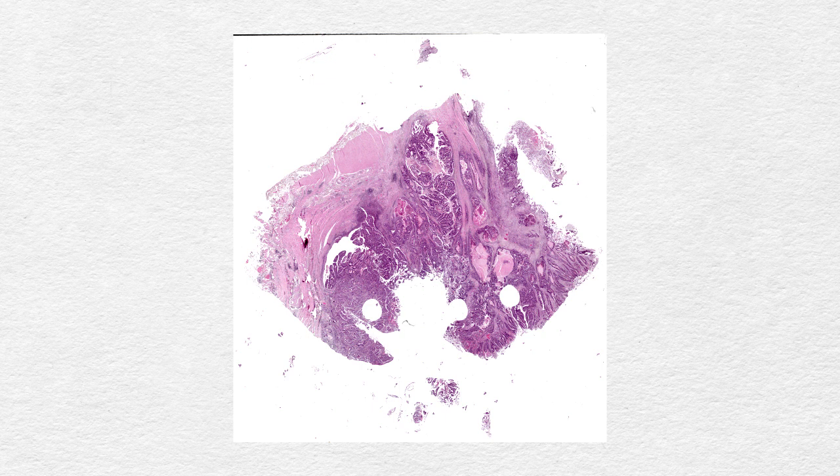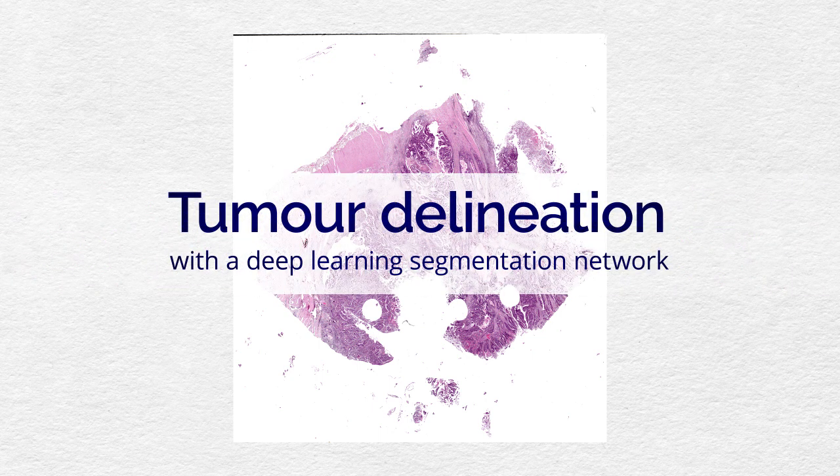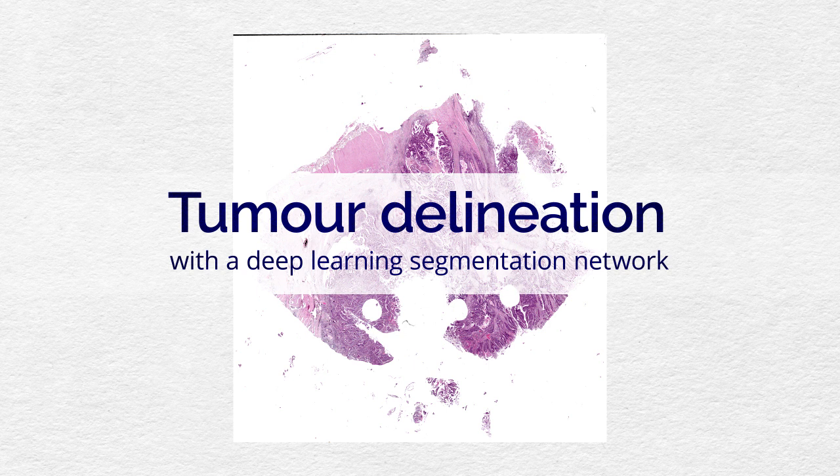We begin with the scanned conventional hematoxylin and eosin stained section. First, the tumor region is delineated with the deep learning segmentation network.